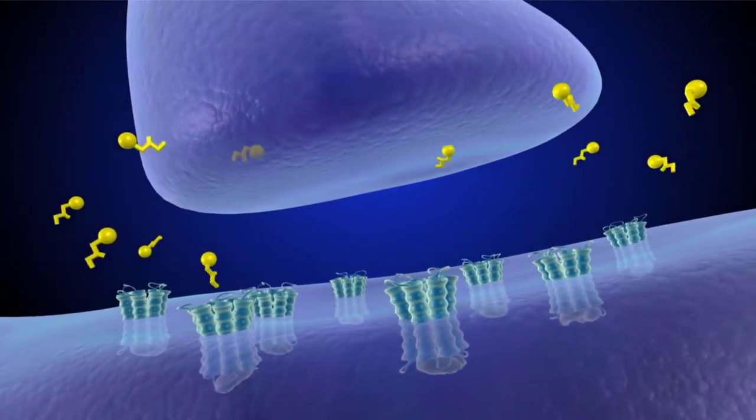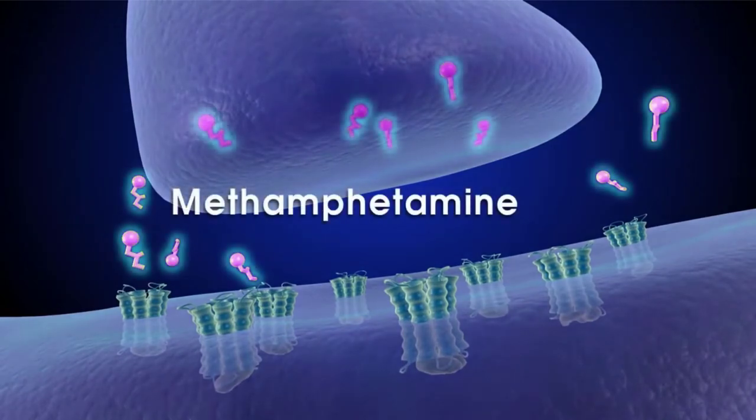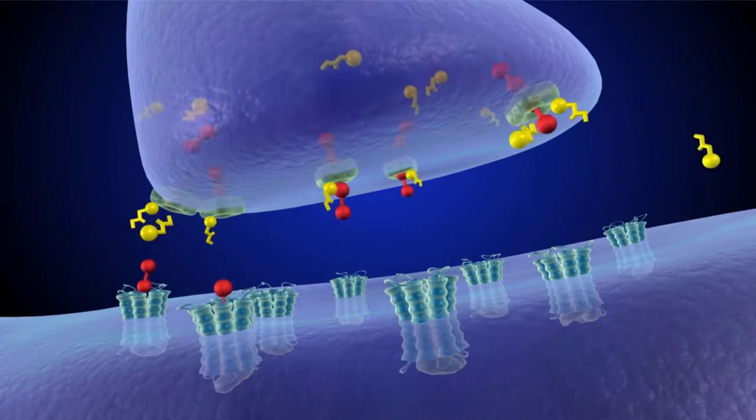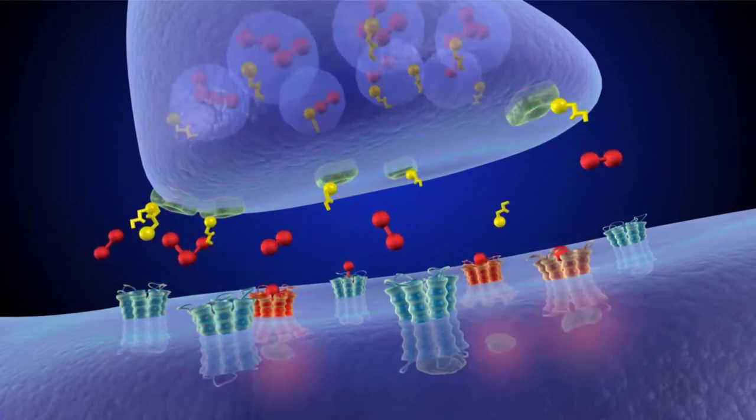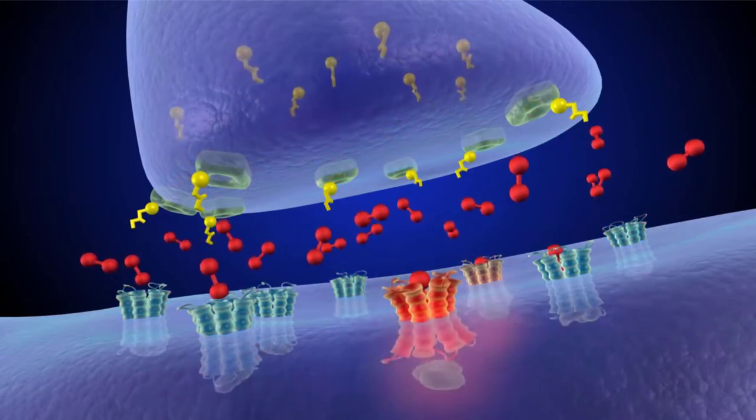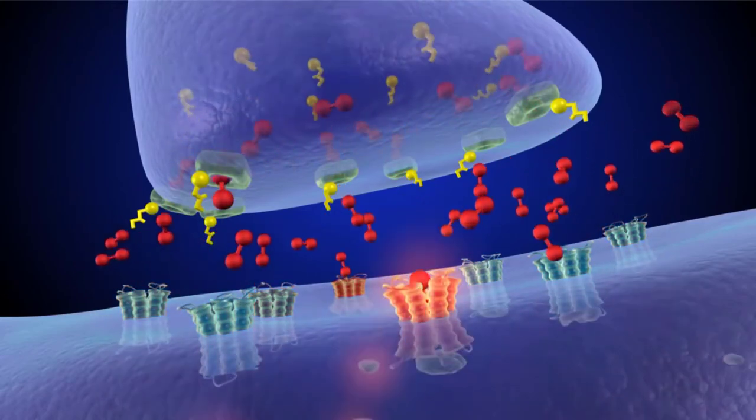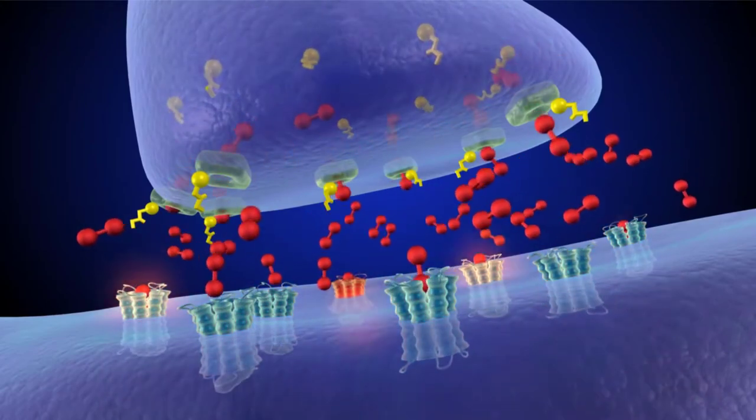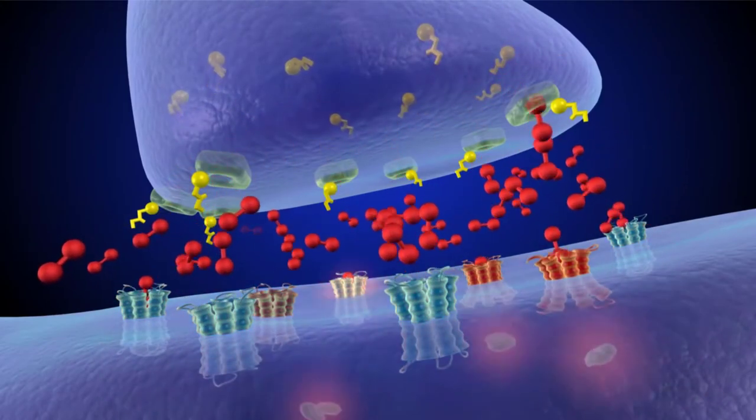Again, when someone uses methamphetamine, the drug quickly enters the brain. At first, the drug blocks the re-entry of dopamine into the presynaptic cell. As the meth accumulates though, it stimulates the release of more dopamine into the synapse, which then cannot be reabsorbed, leading to a significant oversupply of dopamine in the synapse. This causes the postsynaptic cell to be activated to dangerously high levels.